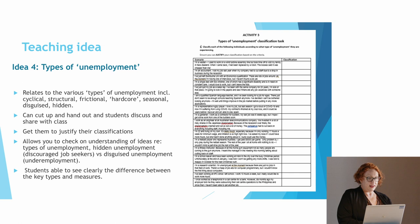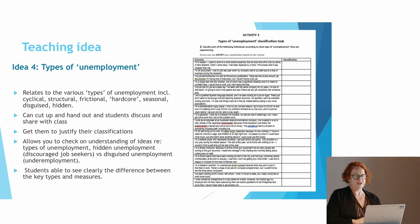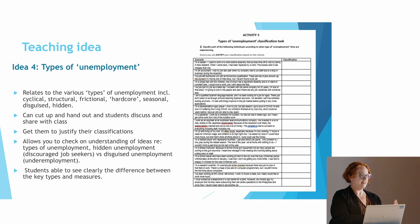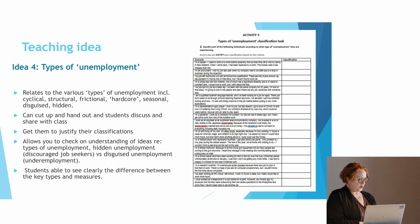This activity asks students to classify different types of unemployment. The credit goes to Anita Forsyth, who taught me at university. You give out a scenario to each student, they work out what they think it is, then read it out and the rest of the class decides. It gives them time without too much pressure to look at the scenario and make sense of it — they can even look at their textbook. It's asking them to participate without putting everyone on the spot.